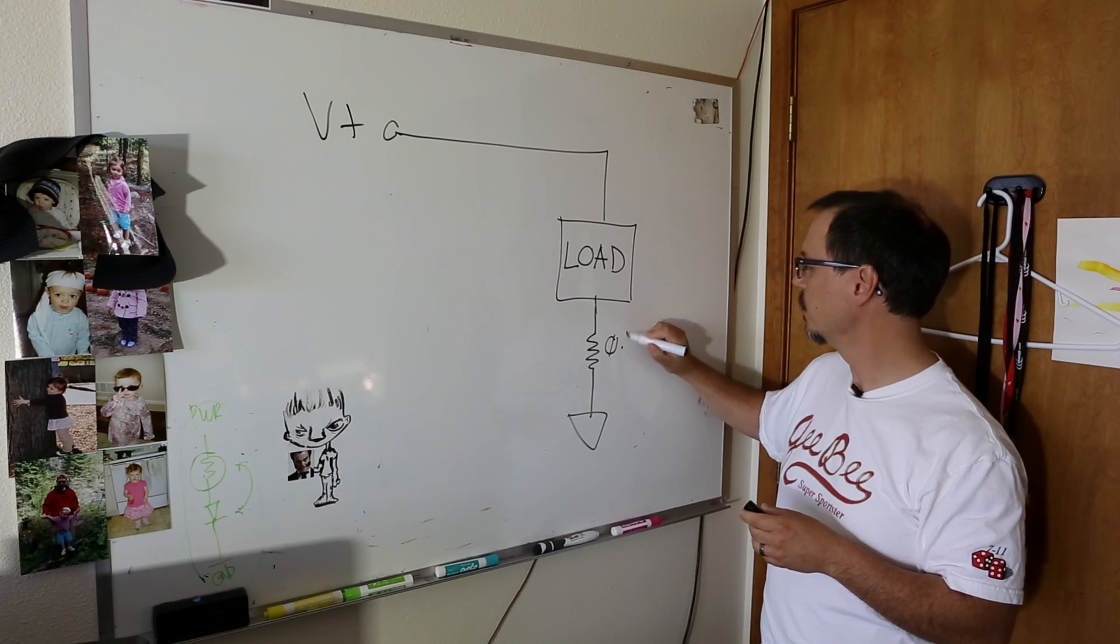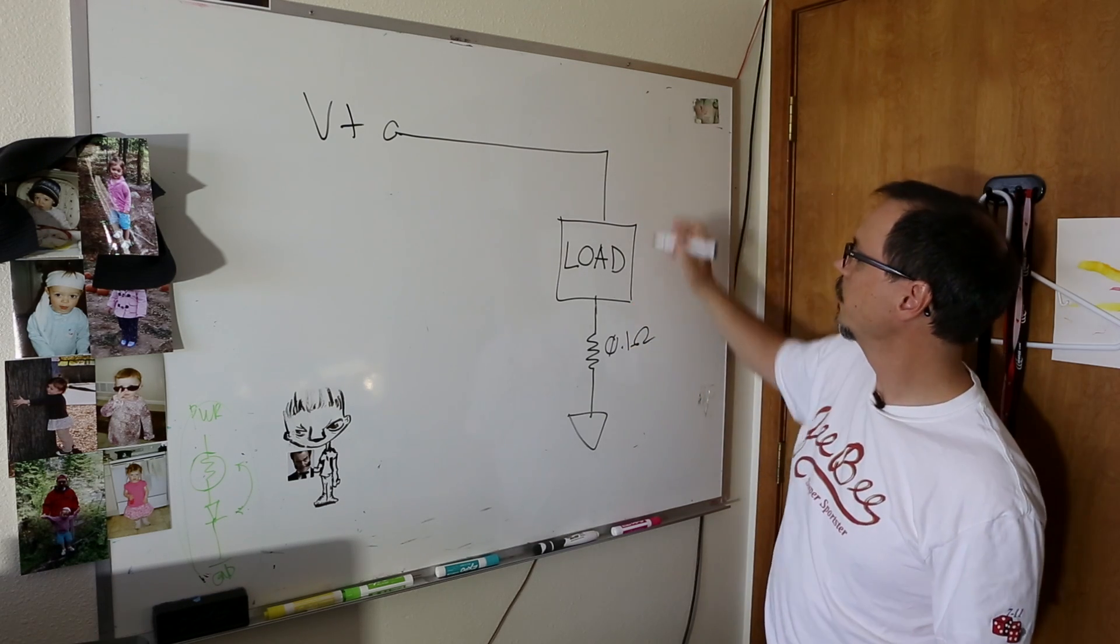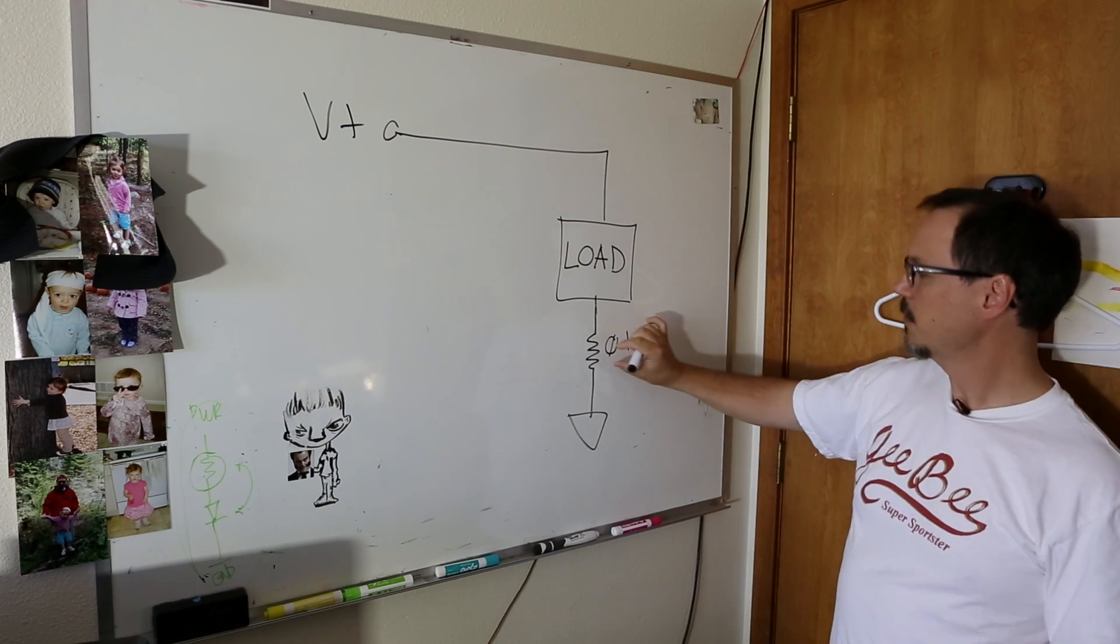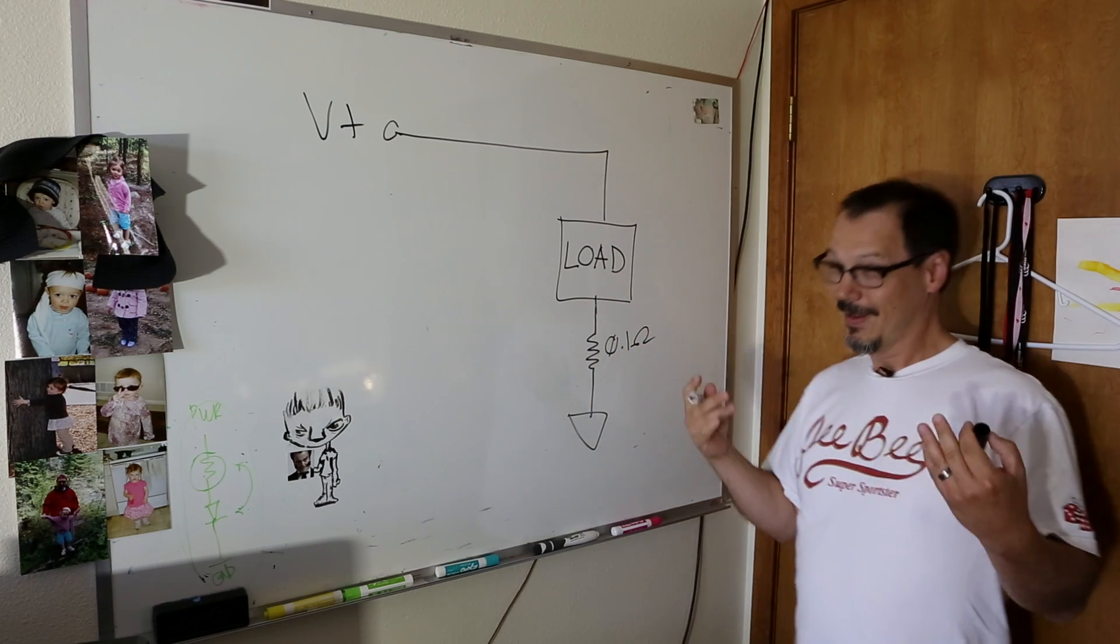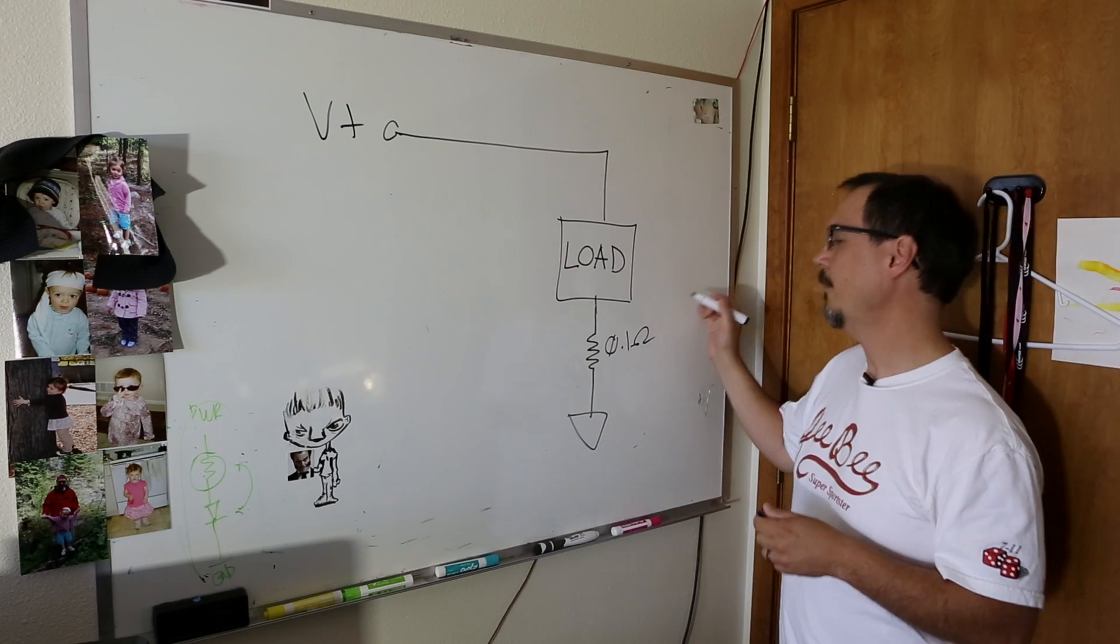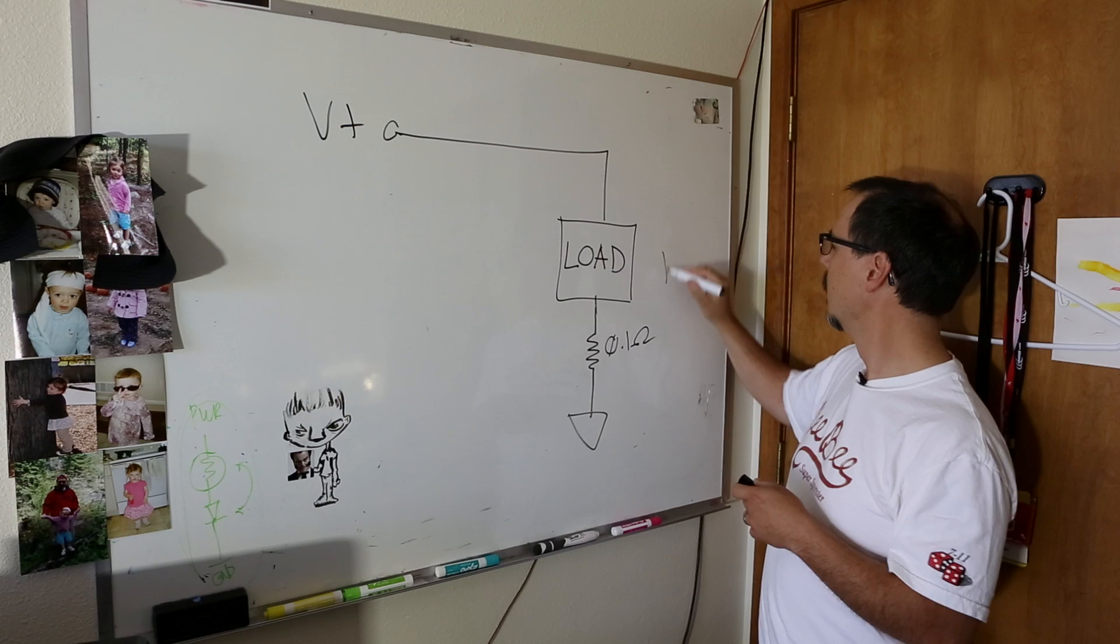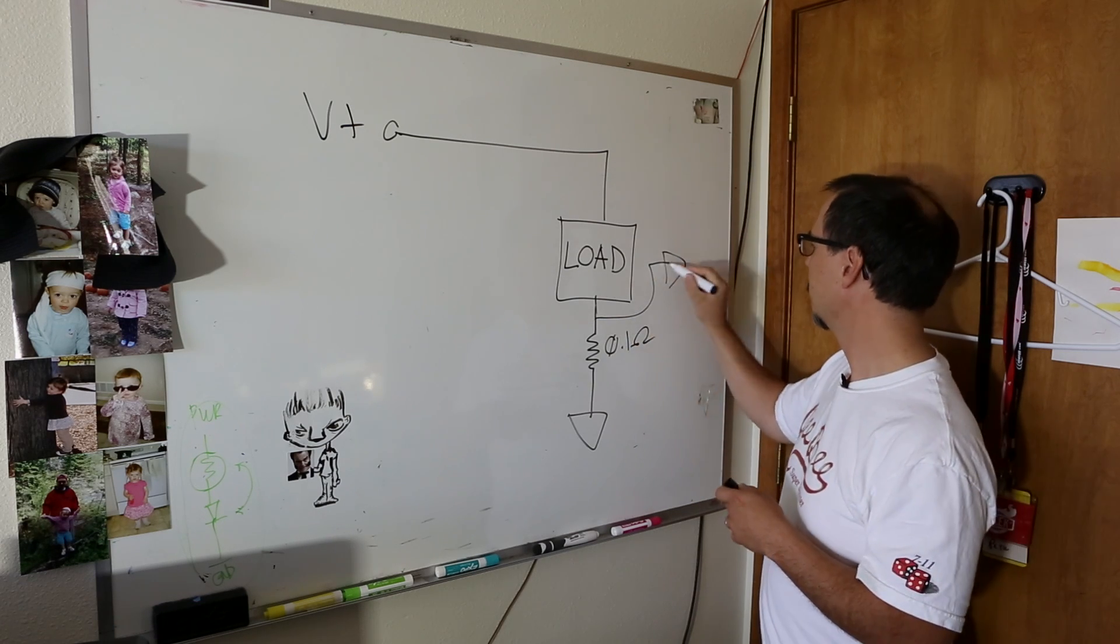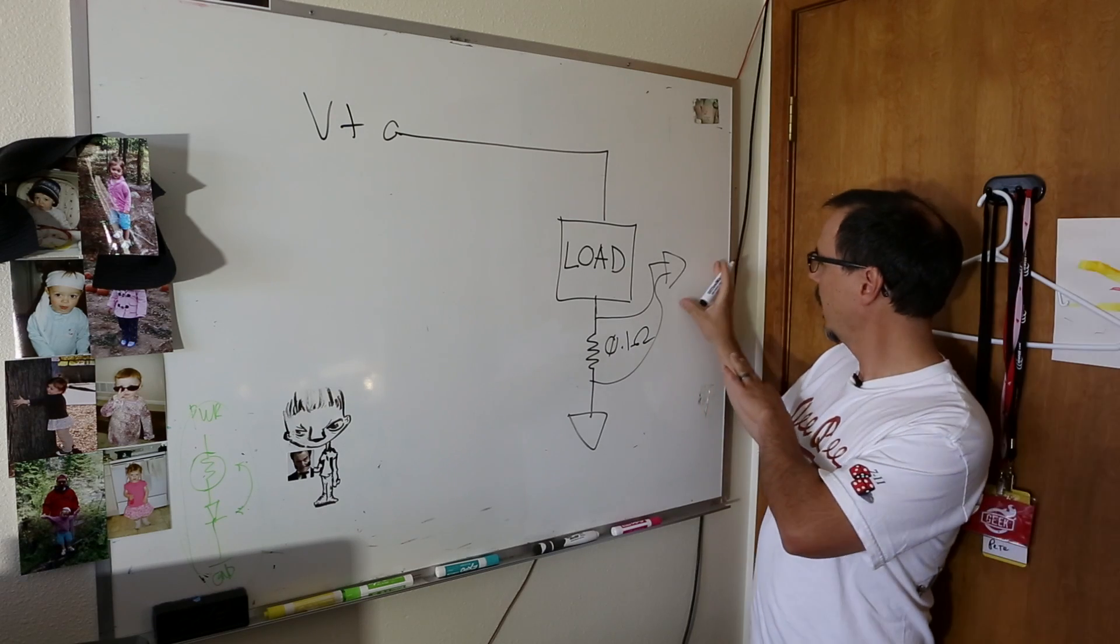One method of sensing current is to actually place a resistance in series with your load, and ideally it's a very small resistance. So typically you use something like a 0.1 ohm resistor, and so as current changes in this thing, there's just a really small little signal that generates over this resistor. Really small, kind of hard to read.